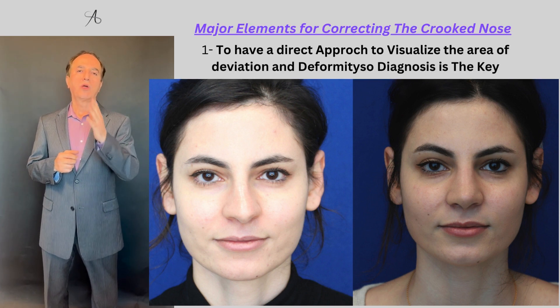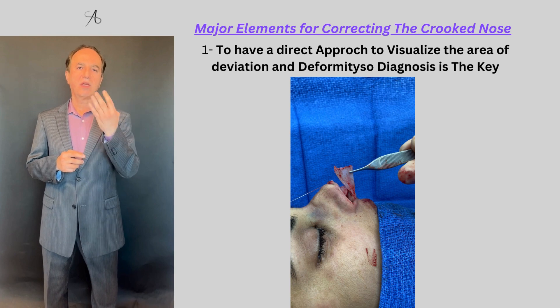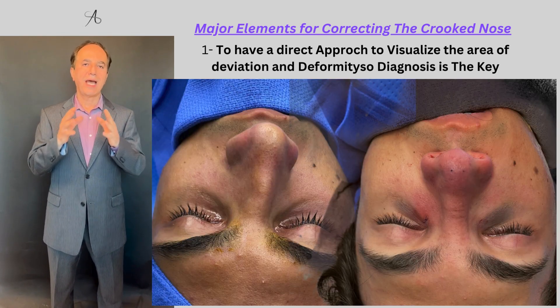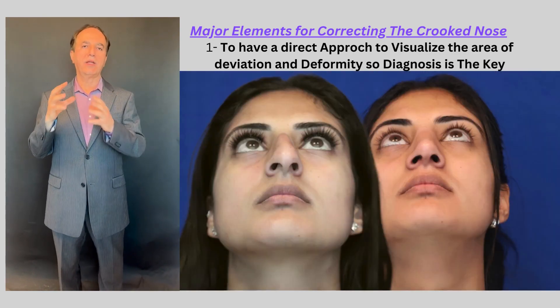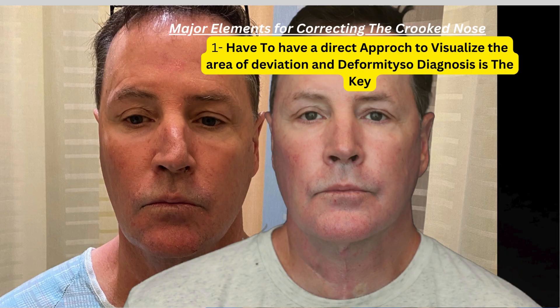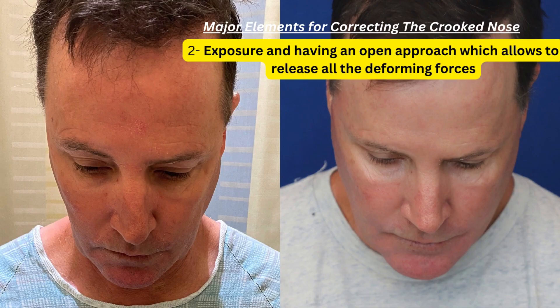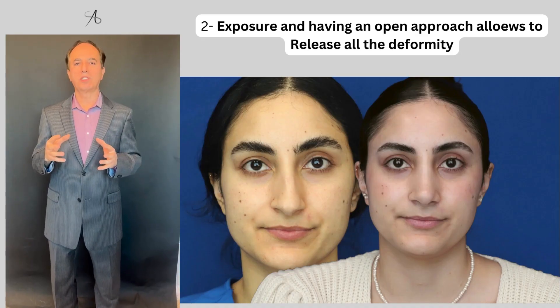To correct a crooked nose, we have to think of four major elements. Number one, we have to have a direct approach to visualize the area of deviation and deformity — so diagnosis is the key. Exposure and having an open approach allows you to release all the deforming forces.